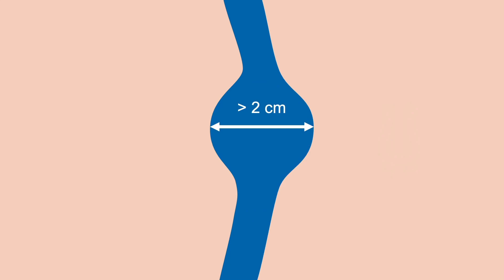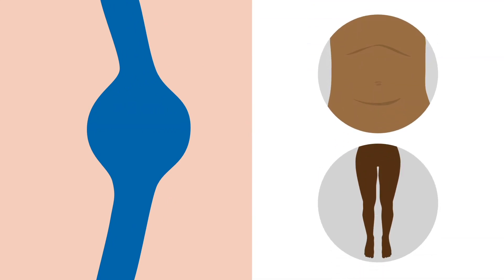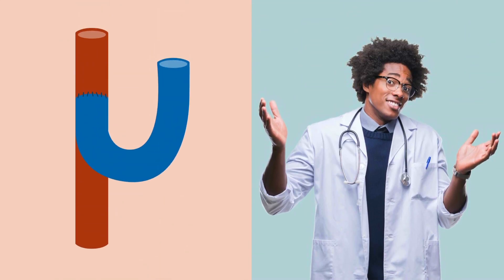There have been proposals that aneurysms should be classified as dilations greater than 2 centimeters; however, there is no standardization of what measurement classifies as an aneurysm. In lower extremity and abdominal vessels, a 1.5 times or greater increase in diameter between a uniform segment just proximal to the dilation and the dilation itself defines an aneurysm. No such criteria has been applied to fistulas, partly because diameter varies so much within a normal outflow vein.